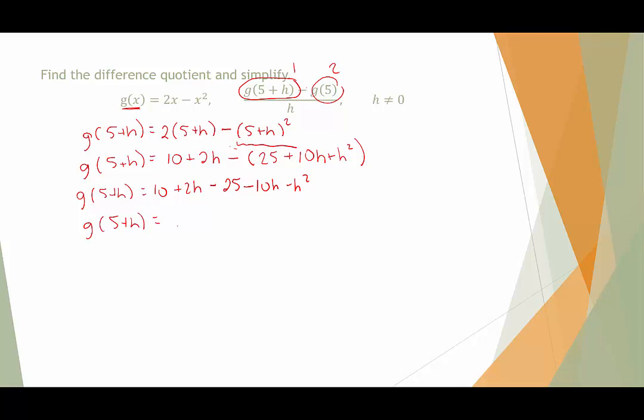Let's simplify this as much as we can. So let's look for like terms. I'm going to start with the h squared, which is all by itself. So I'm going to say negative h squared. Then I have 2h and minus 10h is minus 8h. And I have 10 and minus 25 is negative 15. We did it. We simplified it.